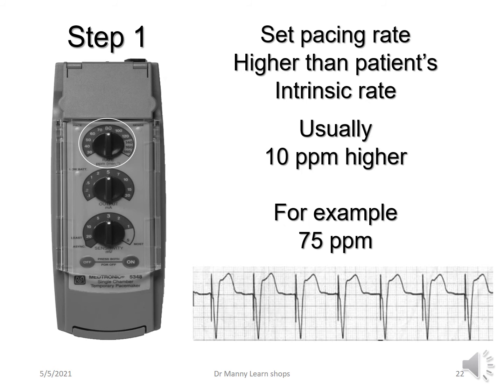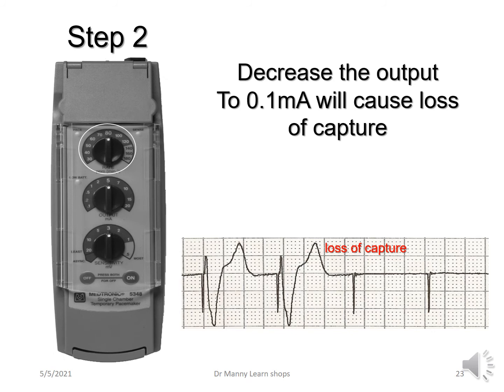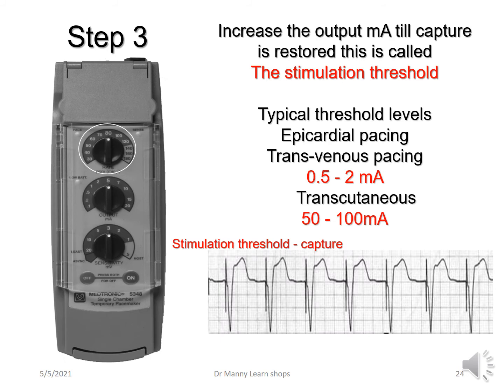You can see the rate dial at the top — set it at 70 or 80. Once you have capture and control of the heart, you decrease the output towards 0.1 milliamps. As you decrease it, observe where you lose capture — this is called loss of capture. Don't leave it too long because the patient may be in asystole. Step three: increase the output in increments until capture is restored — this is the stimulation threshold.